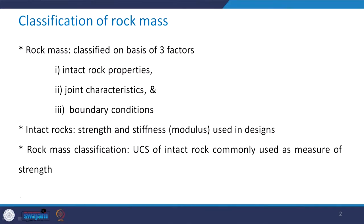In short, we call that as RMR. Before discussing this classification system, we will have some idea about rock mass and intact rock. Rock masses are classified on the basis of three factors: intact rock properties, joint characteristics, and boundary conditions.